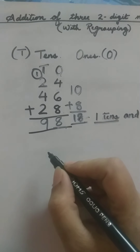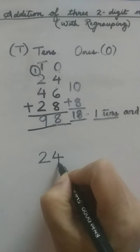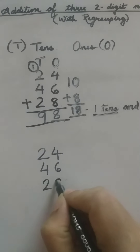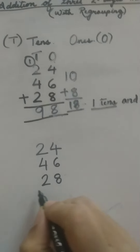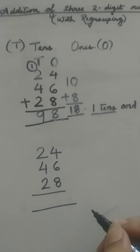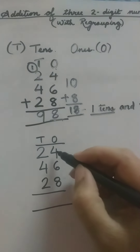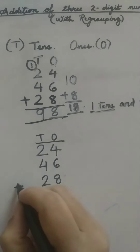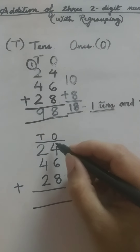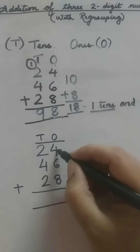We can do the same question in a different way. I am going to tell you that second method also. So we are going to write this question again: 24 plus 46 plus 28. What is our first step? We are going to write the places — ones place and tens place. Now we have to add these three numbers in the ones place first, and we can do this by drawing lines.